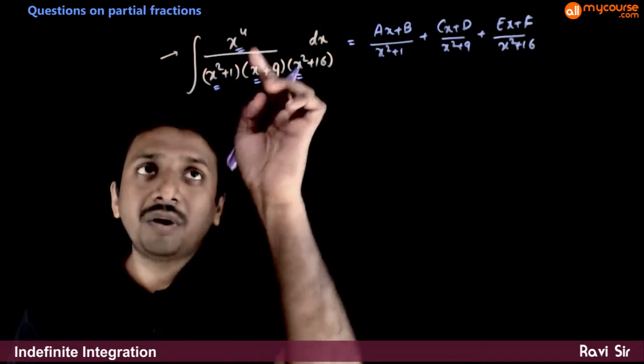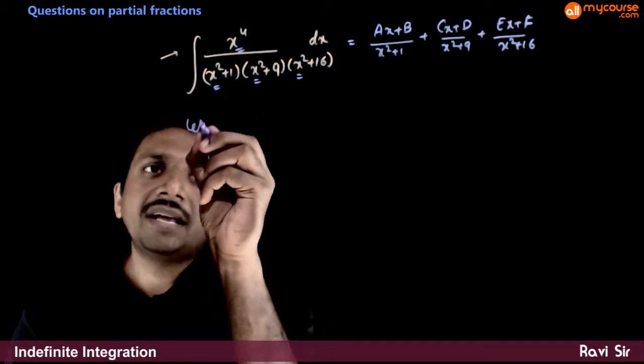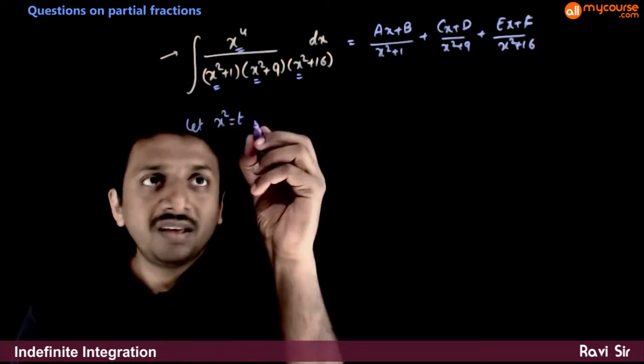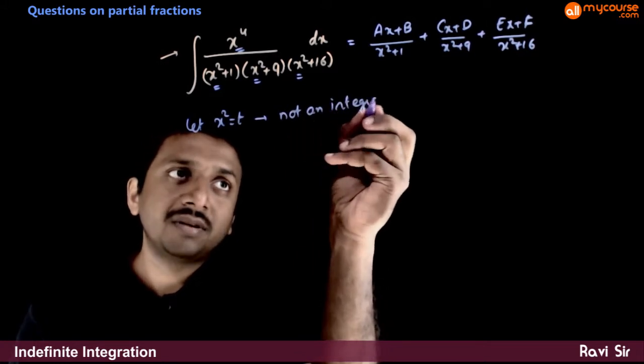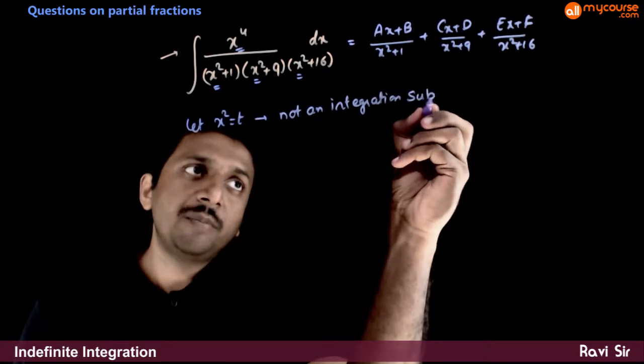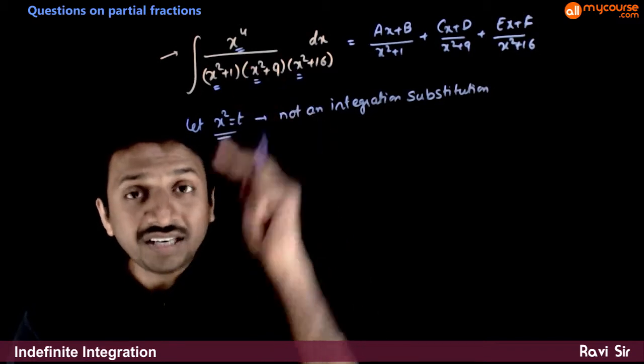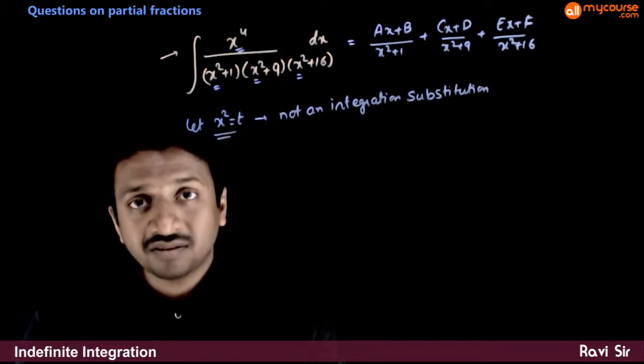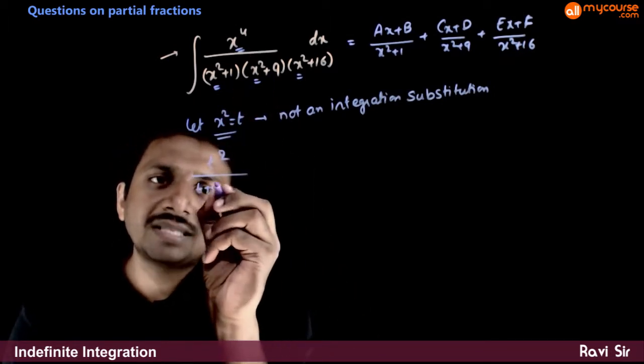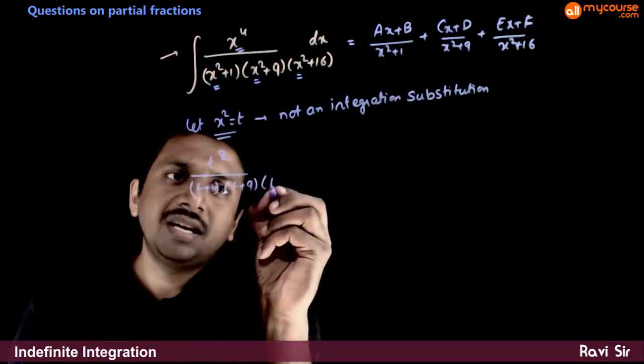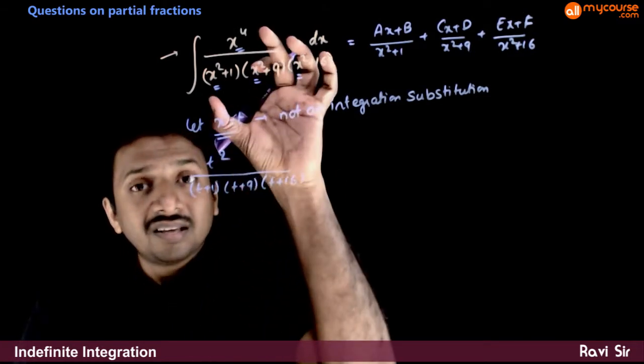Here, what we do is because we have observed that all these terms are terms of x square, let x square is equal to t and this is not an integration substitution. I am not putting the substitution for integration. I am just doing the substitution in this expression for partial fractions.